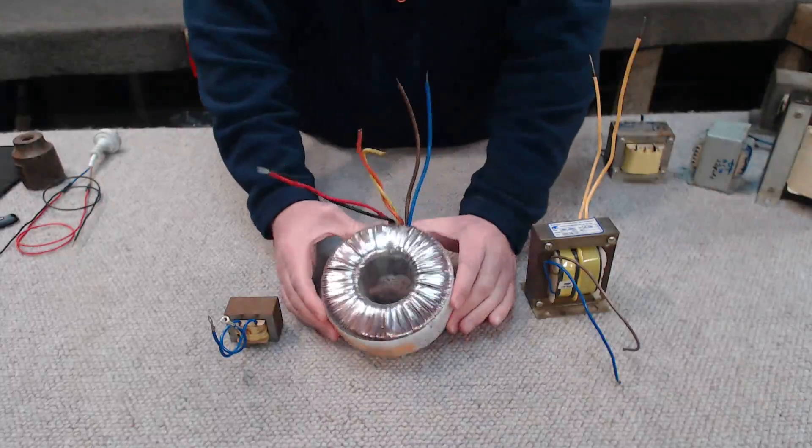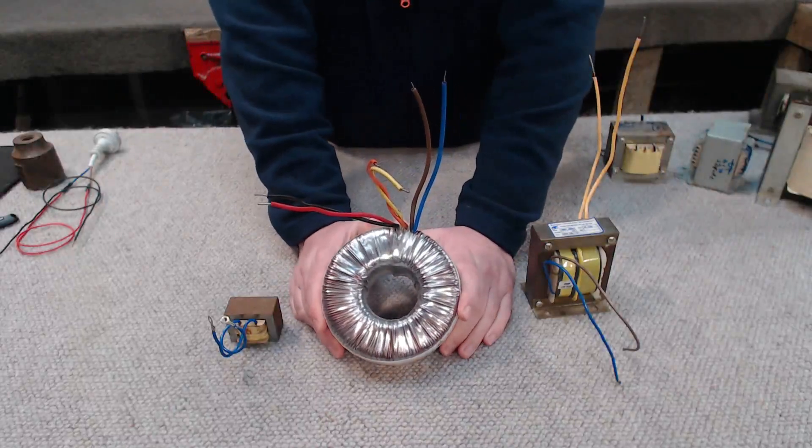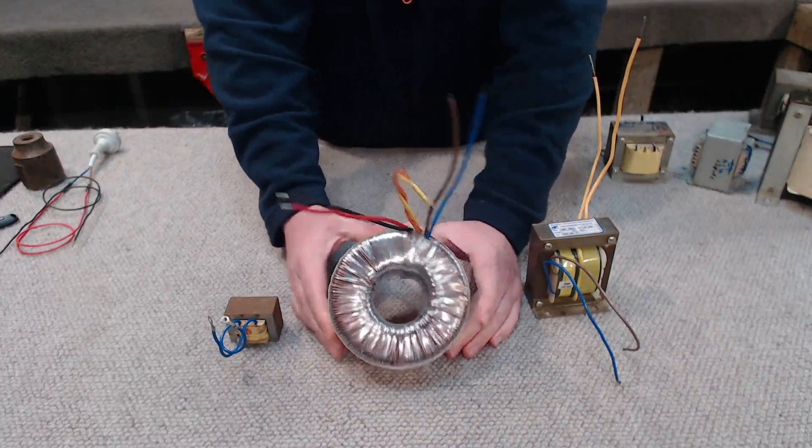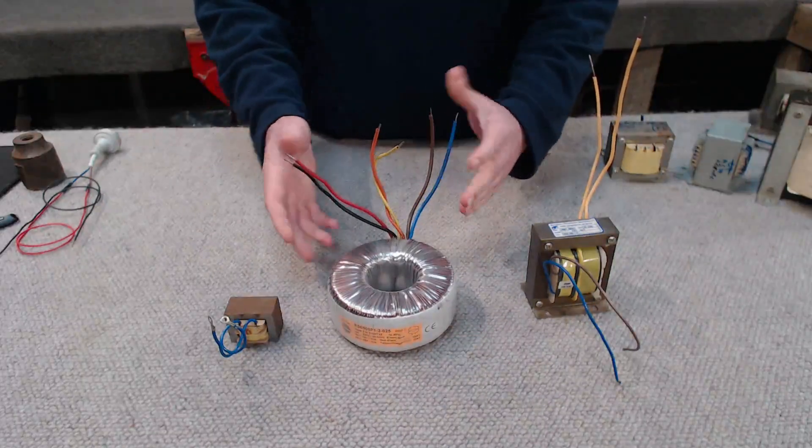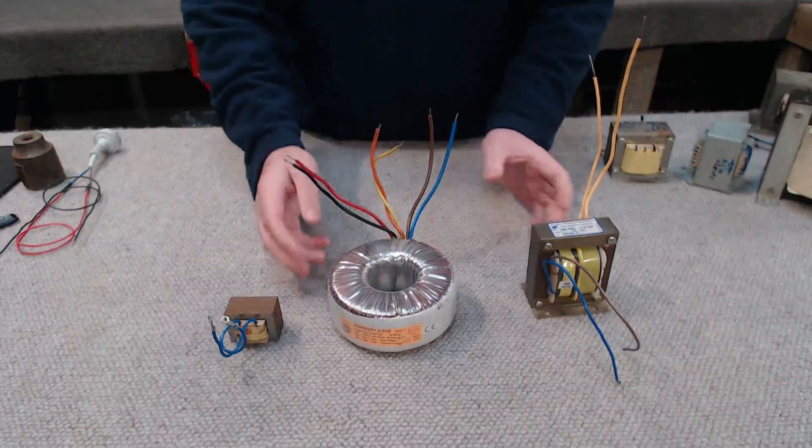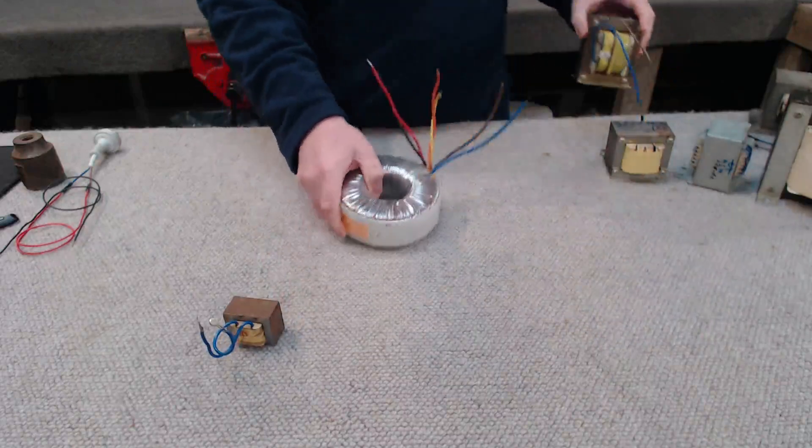If we look at a transformer something like this toroidal transformer with six wires coming out, if you don't understand how a transformer works this can be quite confusing to look at. So we're going to break the transformer down into its basic components.